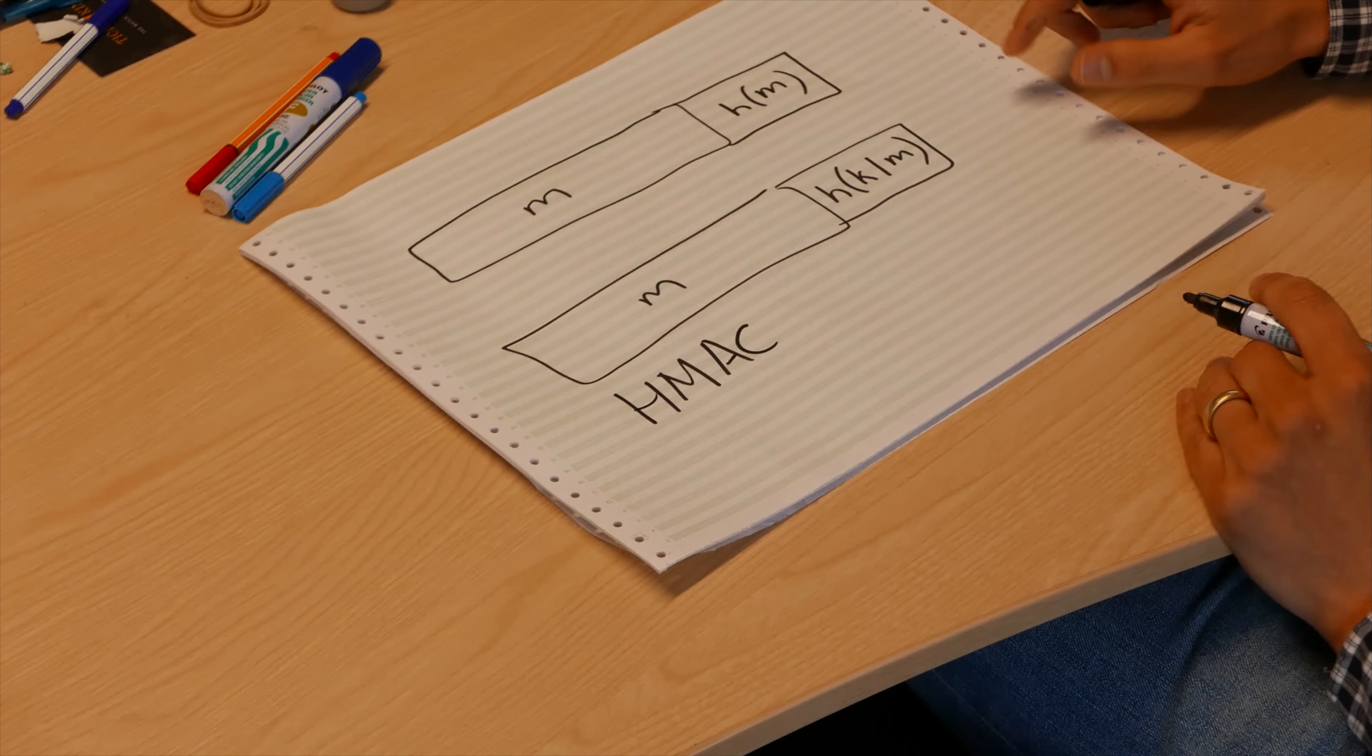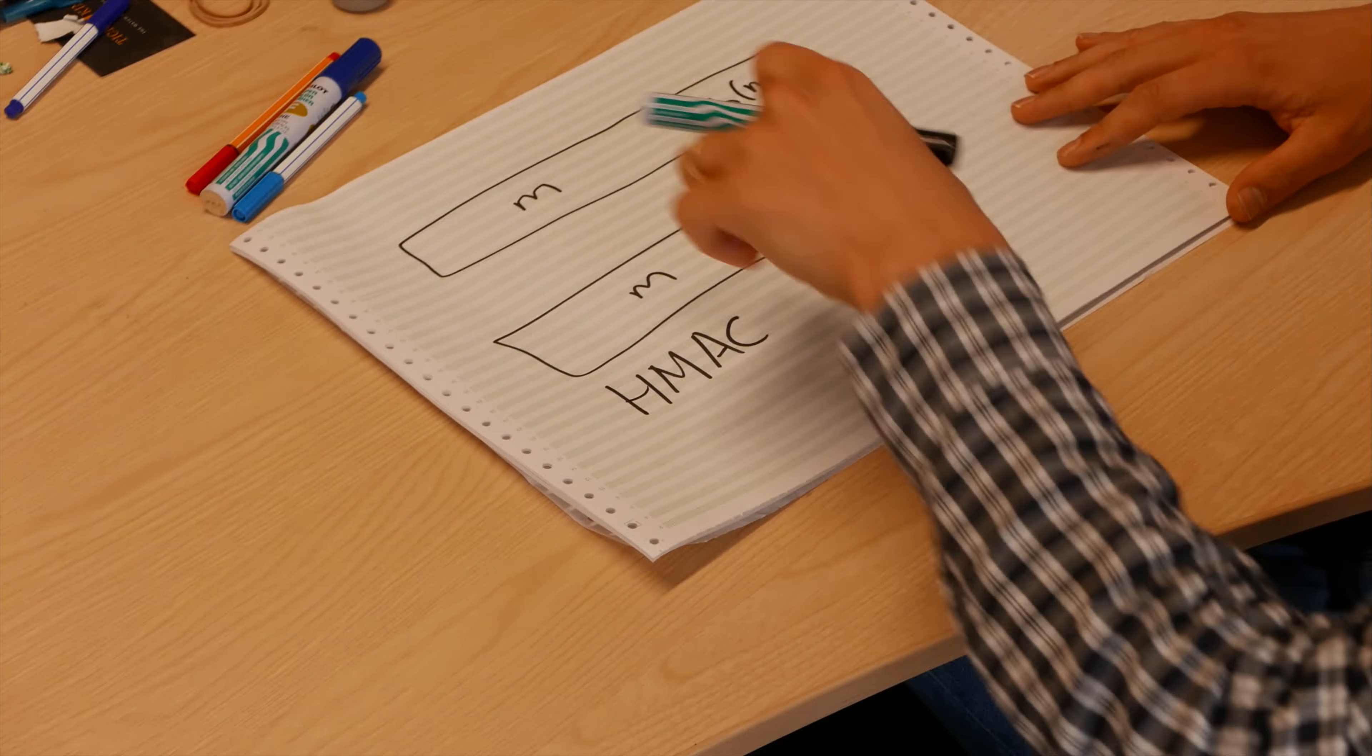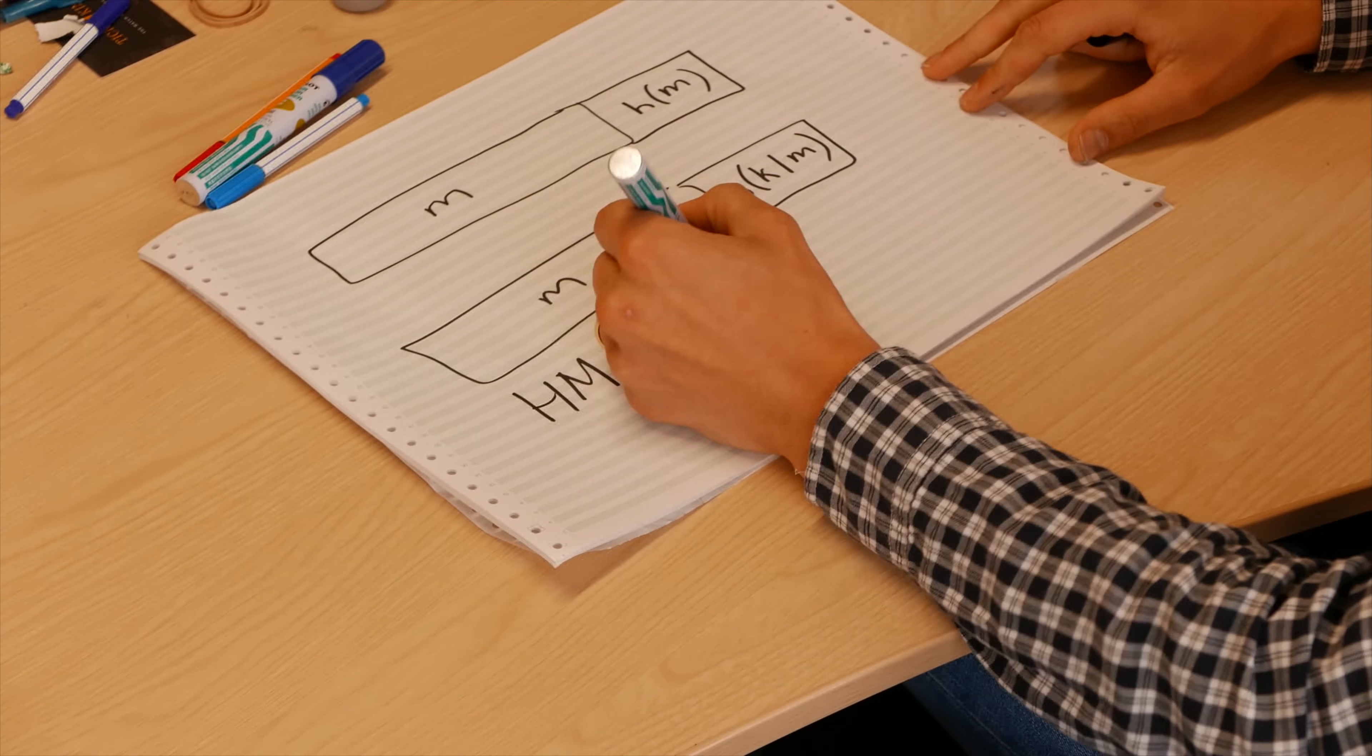So this brings us on to our actual usable technique called the HMAC, which is the keyed-hash message authentication code. It's actually pretty similar to a standard message authentication code except there's two hashes involved, and it's completely immune to length extension attacks.